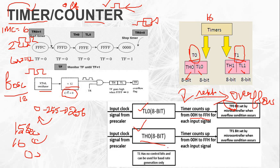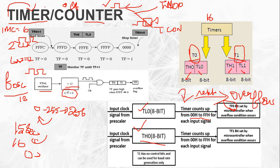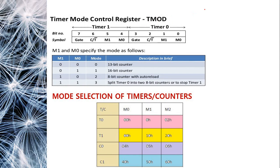The timer control bits are used for generation of baud rate as well. Timer and counter are controlled through special function registers — specifically the TMOD (Timer Mode Register) and TCON (Timer Control Register).